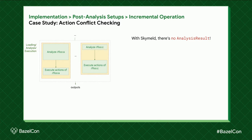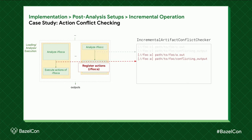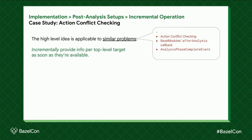With SkyMelt there's no full analysis result — we need to collect the actions and check for conflicts incrementally. In this example, the moment target c is done with analysis, we send the actions of c to the incremental artifact conflict checker — a central repository that has a global view of all actions. Same for target a. Then this centralized repository has the whole picture and can detect if there's a conflict. This high-level idea is applicable to many similar problems, like after-analysis callbacks — we can incrementally provide the analysis info per top-level target as soon as it's available.